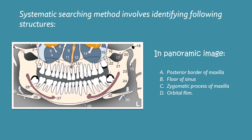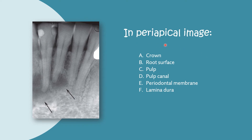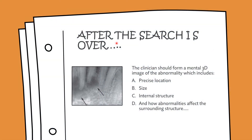The systematic searching method involves identifying specific structures. In the panoramic image, you observe the posterior border of maxilla, floor of sinus, zygomatic process of maxilla, and orbital rims. In the periapical image, you must look at the crown, root surface, pulp, pulp canal, periodontal membrane, lamina dura, etc. After the search, the clinician should form a mental 3D image of the abnormality, including its precise location, size, internal structure, and how it affects surrounding structures.